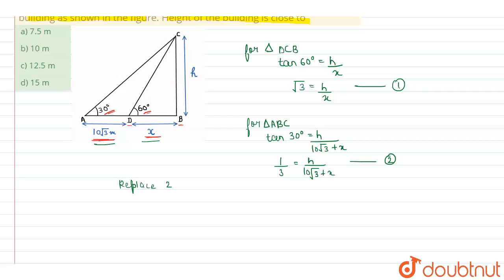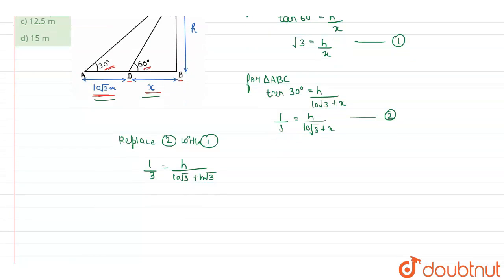Now when we replace this second equation with the first one, so we will get 1 upon root 3 is equal to h upon 10 root 3 plus h root 3. So we will get 1 upon root 3 is equal to h root 3 upon 10 into 3 plus h.